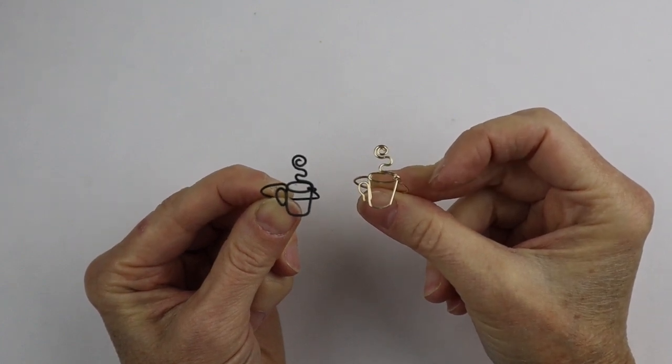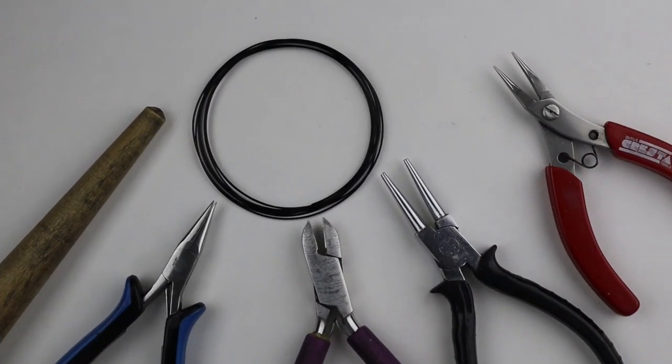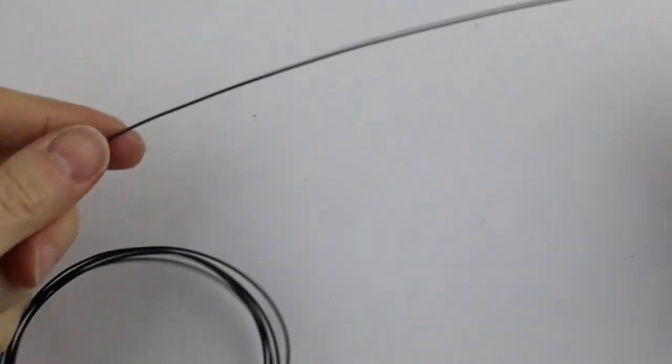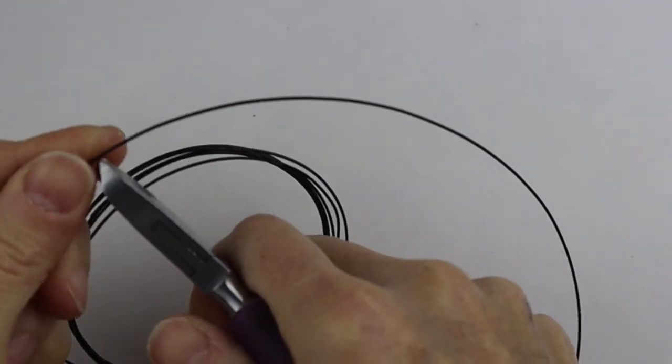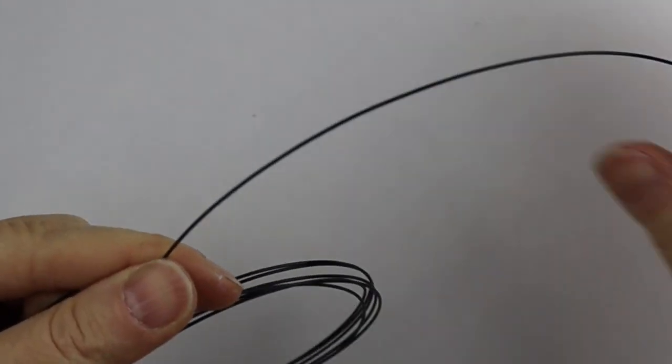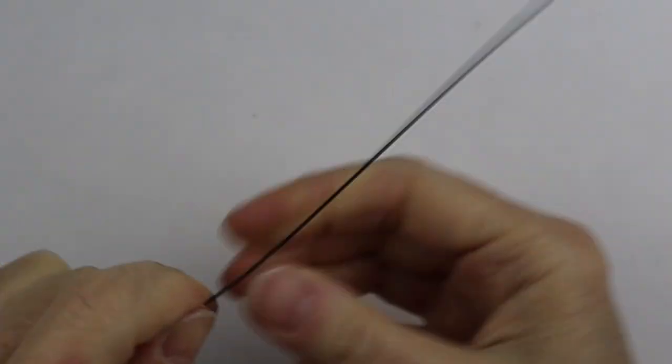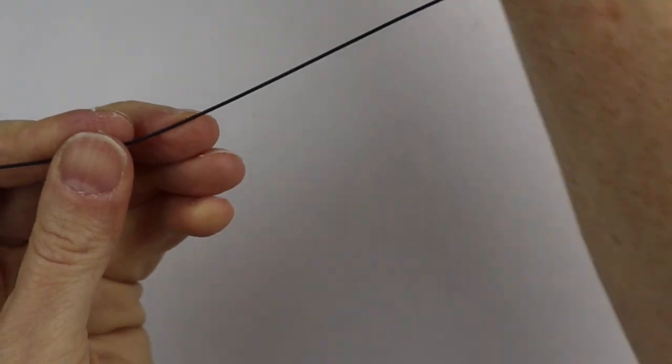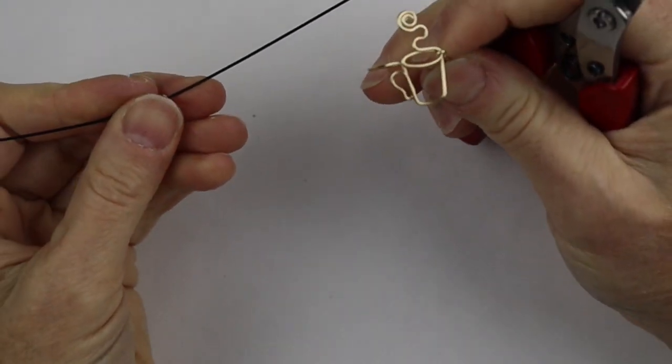So what you're going to need for this project is your pliers, the ring cone, and some 20 gauge wire. We need a piece of wire that's about 12 inches long, so we'll just cut the wire and straighten it out.